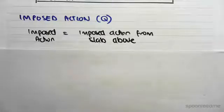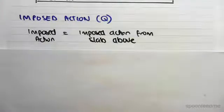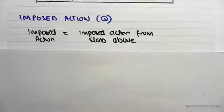The imposed action is equal to the imposed action from the slab above. We don't have any imposed actions from the beam itself. Like the permanent action, we had the self-weight of the beam plus the weight of the slab above. But for imposed action, the imposed actions only apply to the slab and that transfers through the structure everywhere.